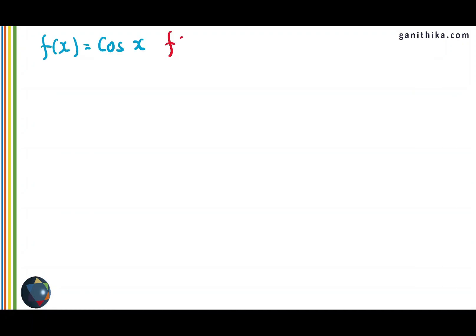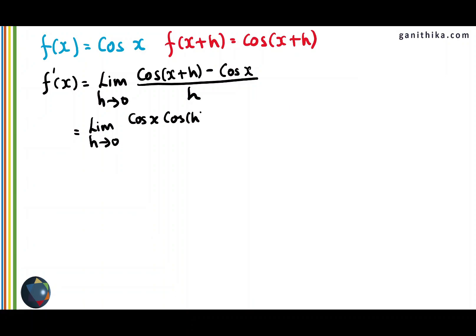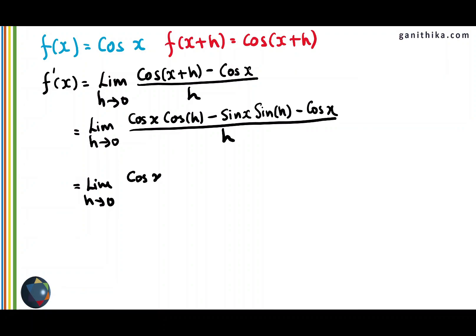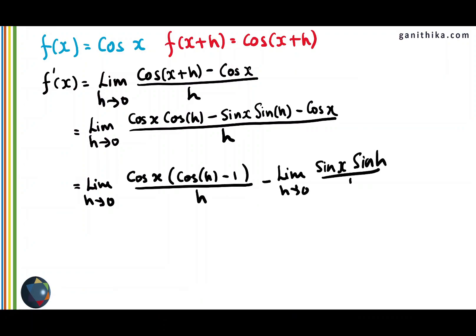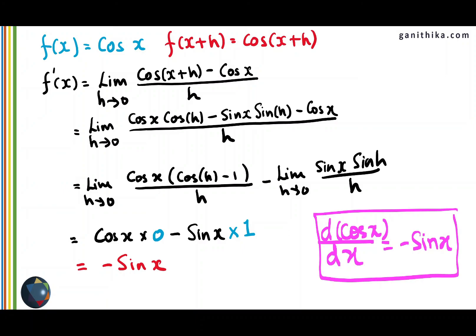Now let us do cos(x). In the same way, substitute f(x+h) and f(x) in the formula and expand using the compound angle formula for cos(x+h). Collect the terms with cos(x) together, divide each term by h separately, take cos(x) outside and find the limits. The final answer is negative sin(x). So the derivative of cos(x) with respect to x is negative sin(x). You should remember: the derivative of sin(x) is cos(x), and the derivative of cos(x) is minus sin(x).